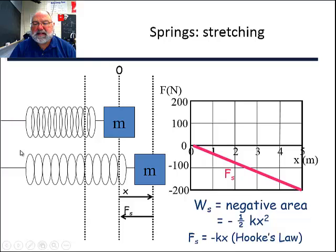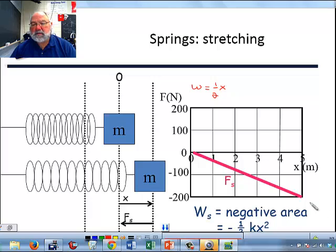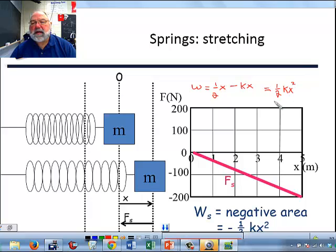Where does the k x-squared come from? If we write it out as the area of the triangle: work equals one-half times the base (x) times the height (force). Hooke's Law says force equals negative k x, so combining these we get one-half k x squared, and since the force is opposite the direction of stretch, it's negative. Negative work. So that's how this works.